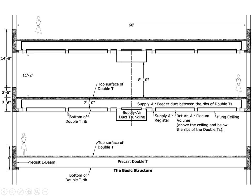Air in this case is delivered through the ceiling as supply air. It swirls around the space and returns through a ceiling plenum. The return air plenum volume is above the ceiling and below the bottom of the ribs. It's not a very deep volume, but it's very wide — it basically covers the entire width of the space — making it a pretty effective volume for returning air.